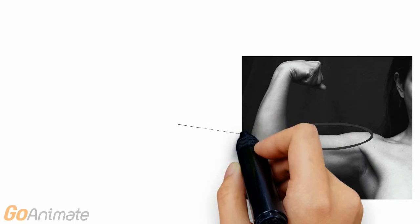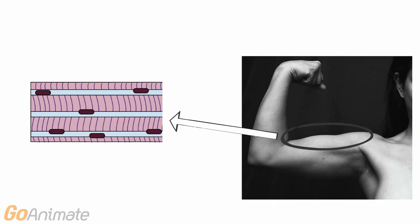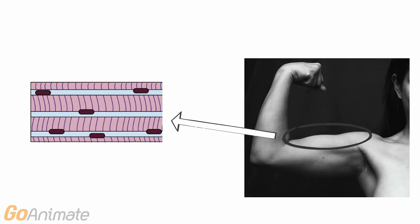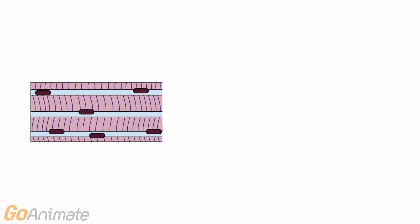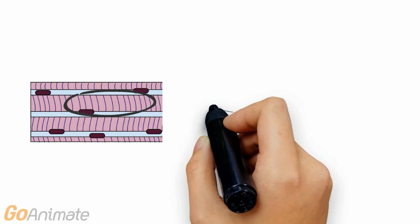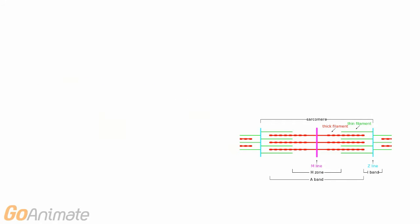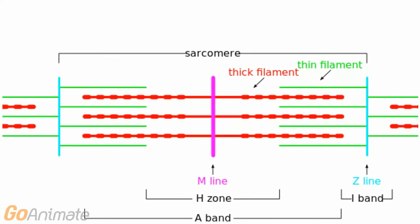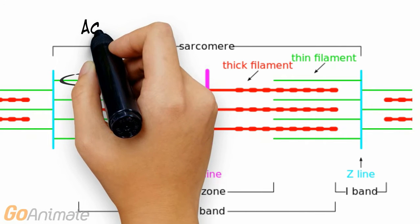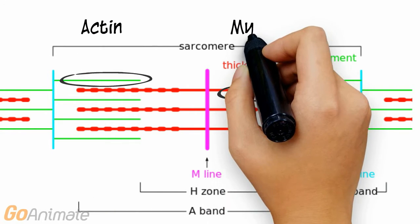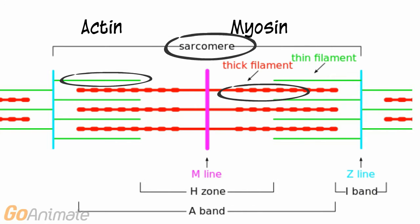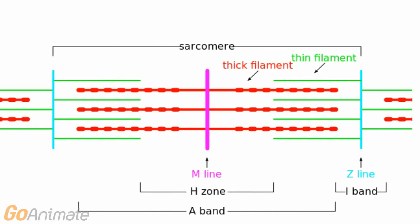Let's take a closer look at muscle tissue. Muscle contains contractile units, and these contractile units contain the protein filaments actin and myosin. The units are called sarcomeres.